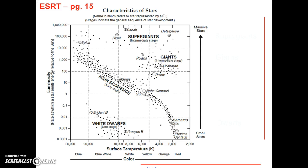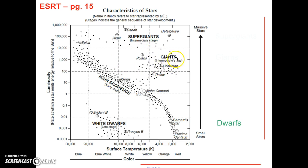We actually have a modified version of this in our reference table on page 15, so let's spend a little time learning how to use it. On the right side of the graph, it shows us the size of the stars. Starting at the bottom, we have the smallest stars, classified as dwarfs. As you move up the chart, the stars get bigger. In this area, we have stars called giants, and even more massive stars are known as supergiants.